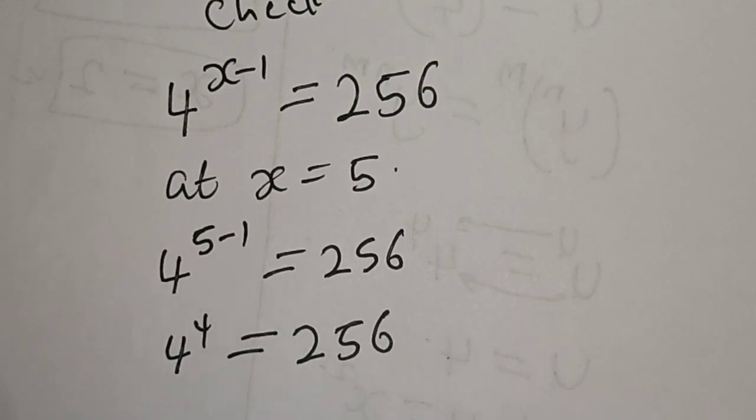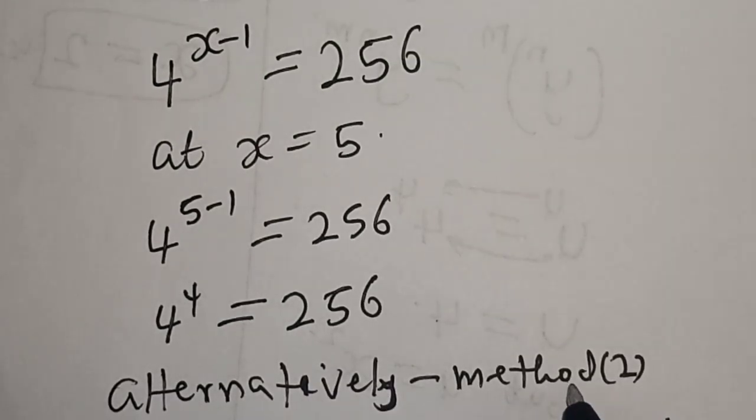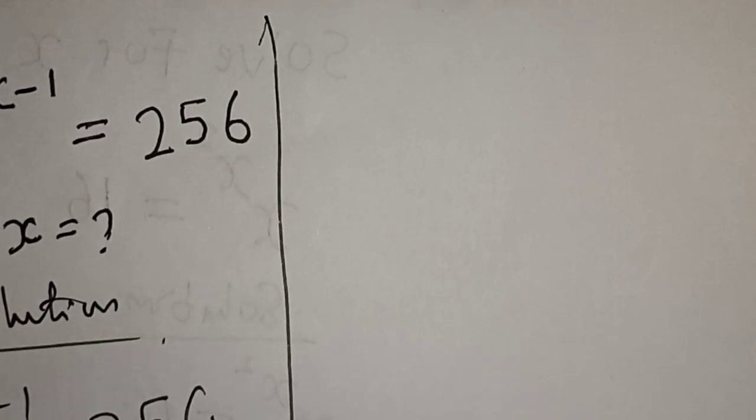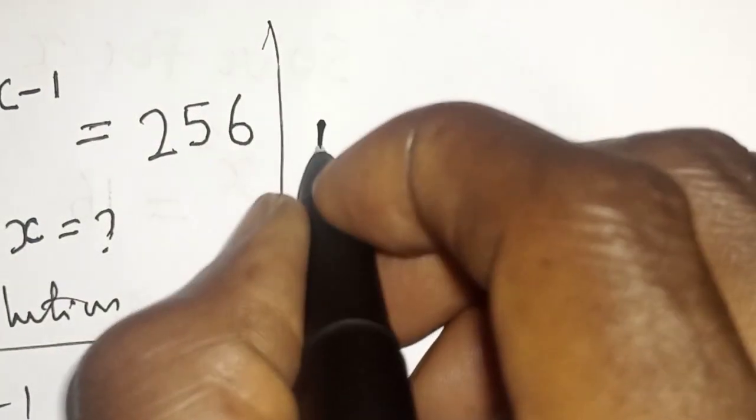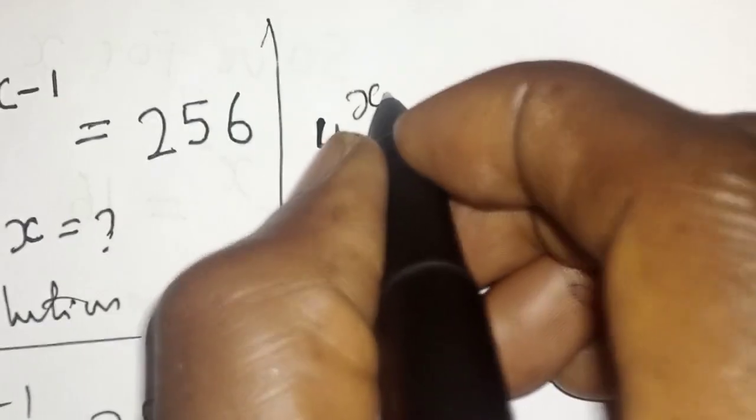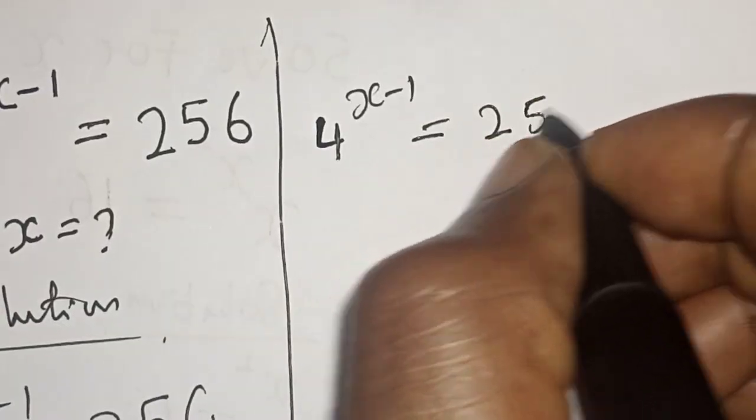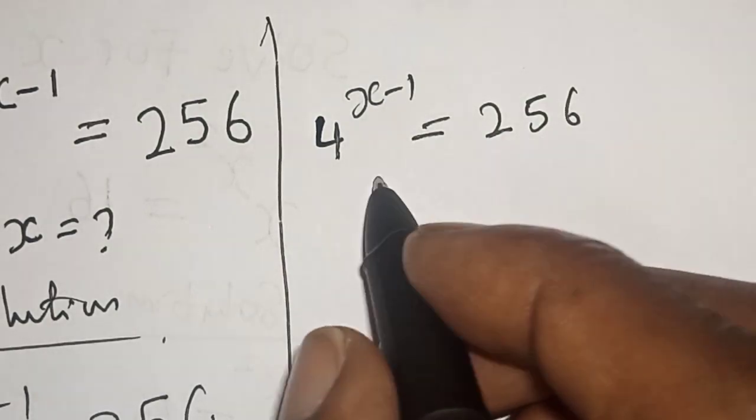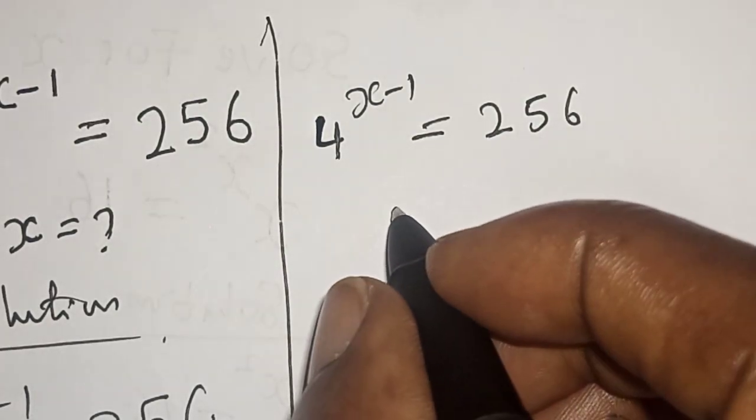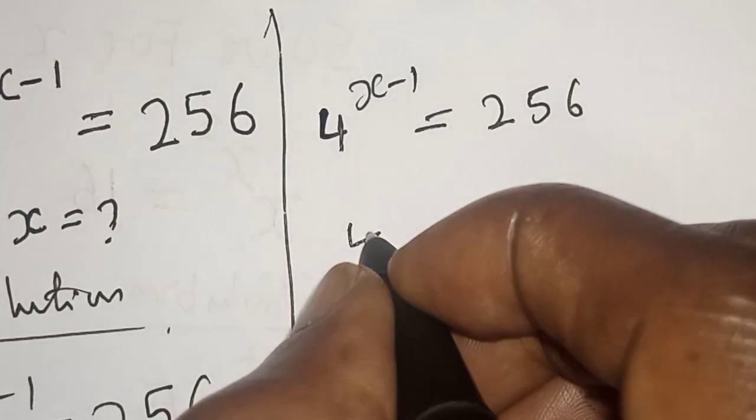Now let's solve it another method. Alternatively, let's call this method 2. We have the given equation 4 to the power x minus 1 is equal to 256. With this method you can solve this question within 30 seconds or 10 seconds.